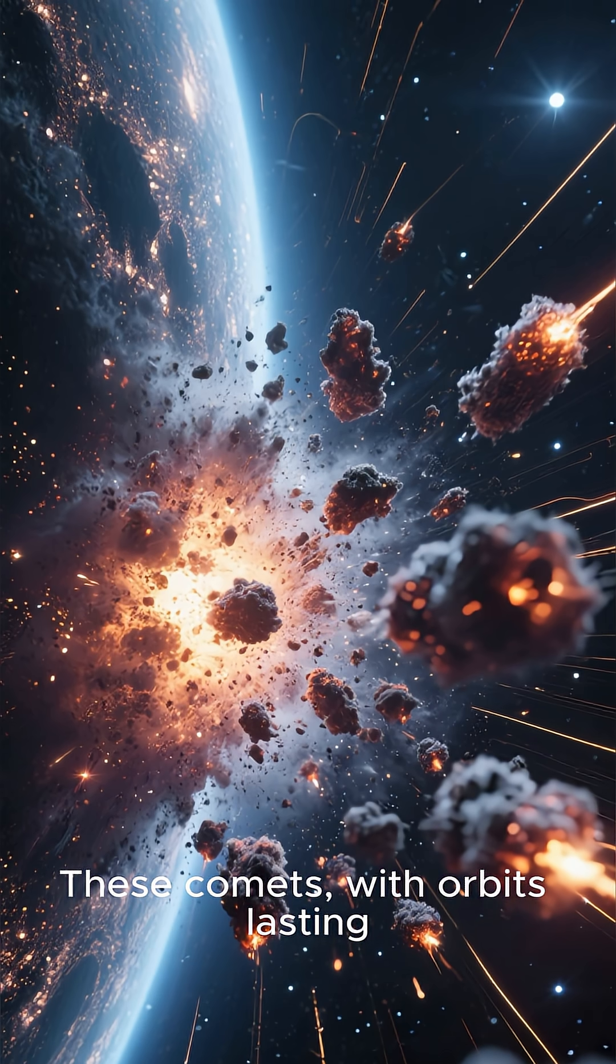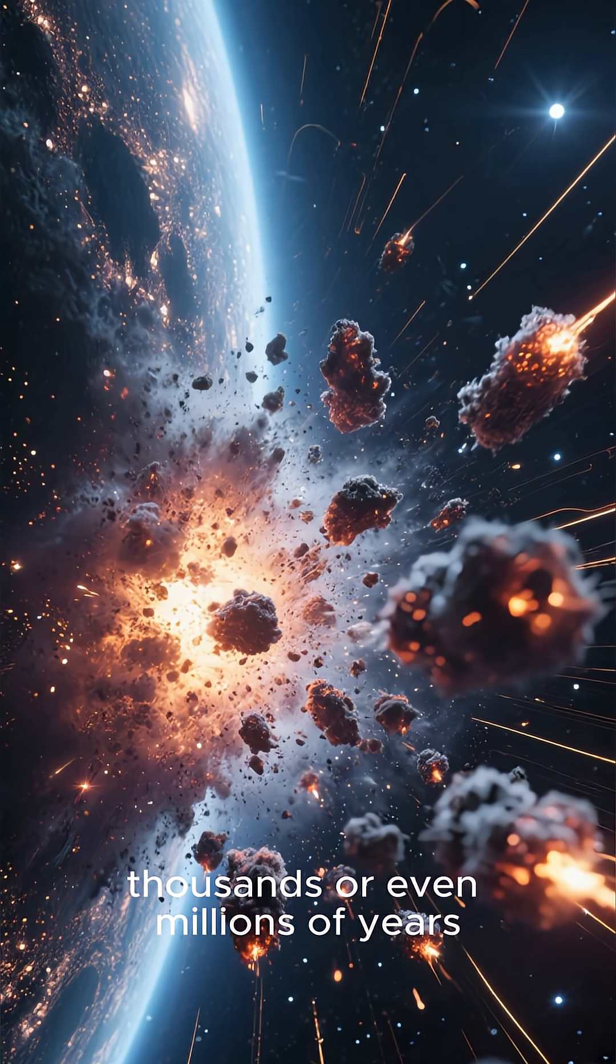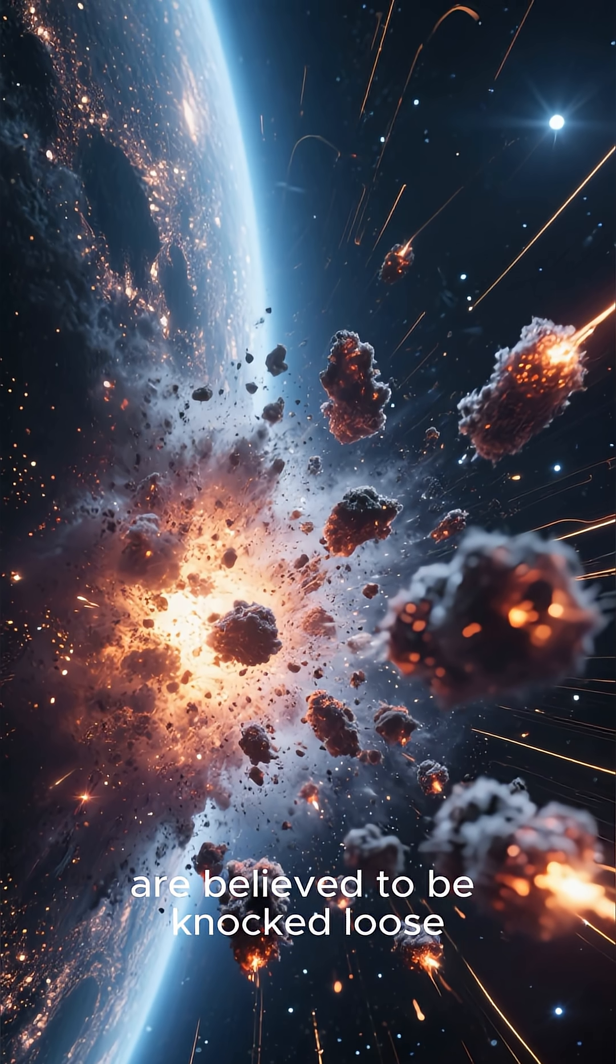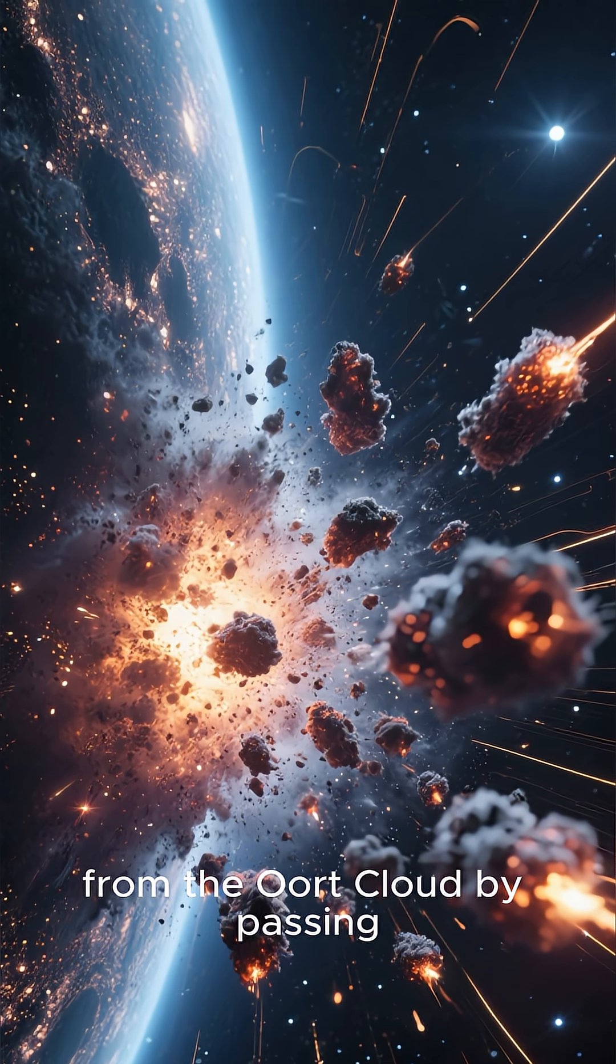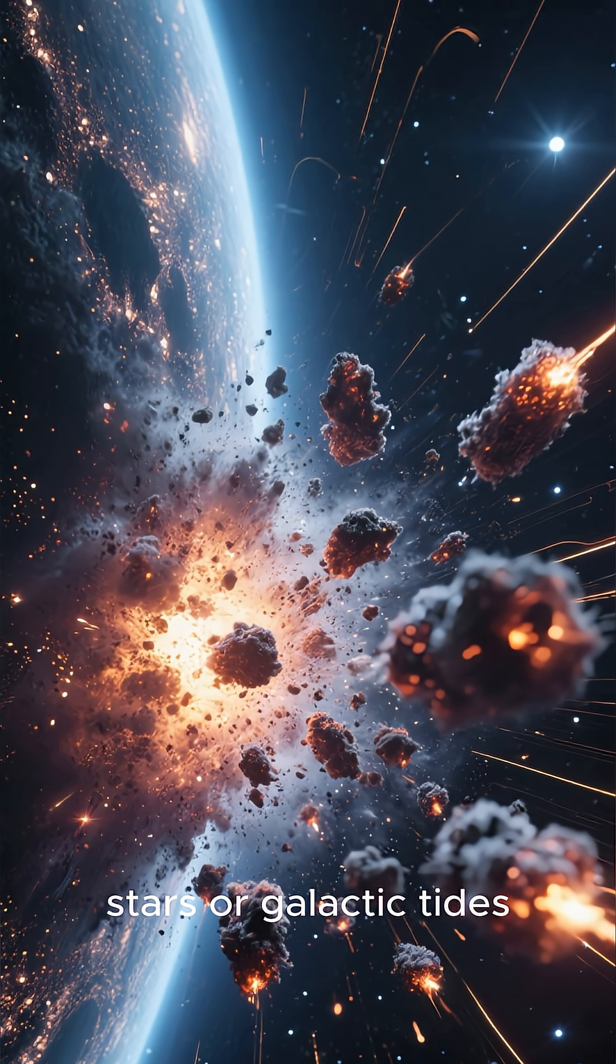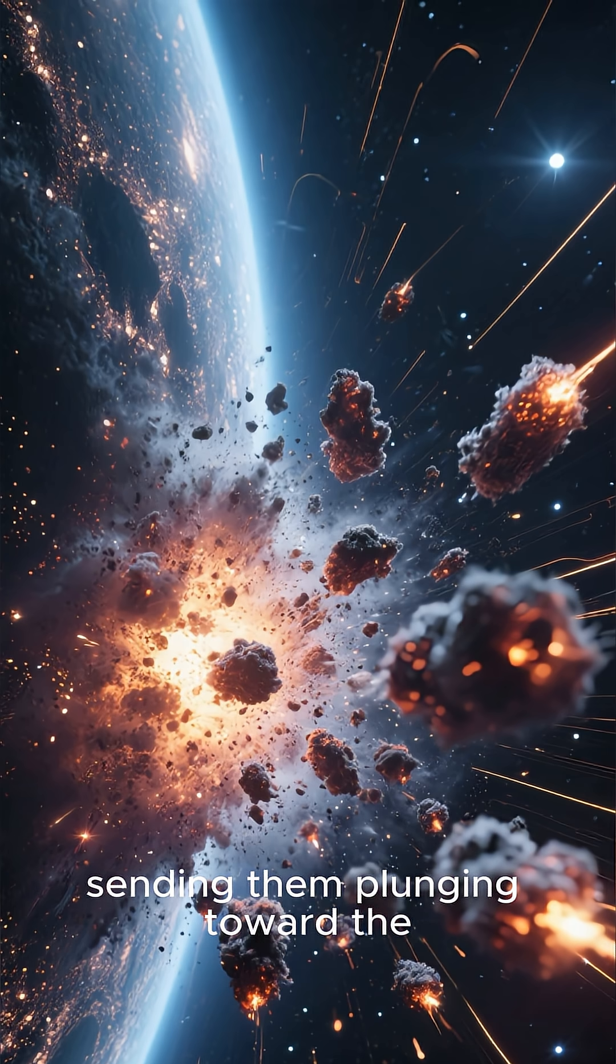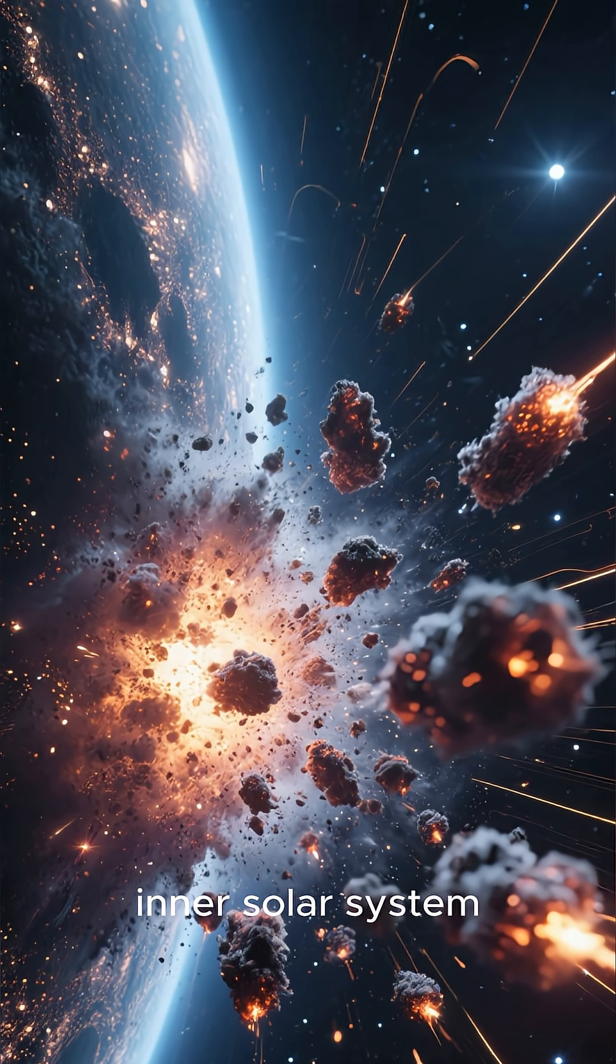These comets, with orbits lasting thousands or even millions of years, are believed to be knocked loose from the Oort Cloud by passing stars or galactic tides, sending them plunging toward the inner solar system.